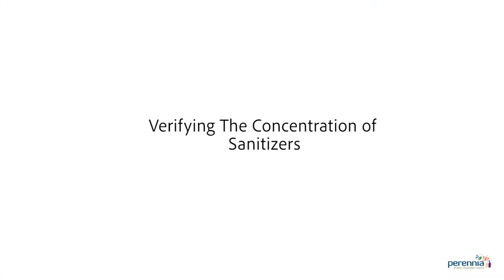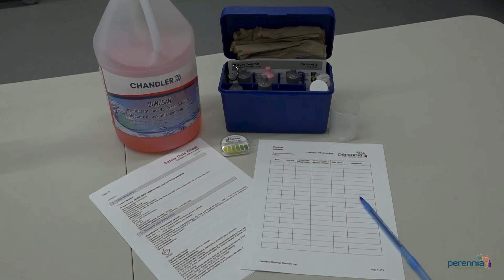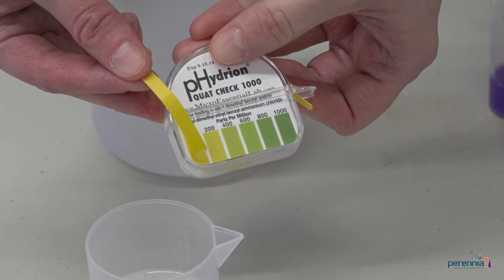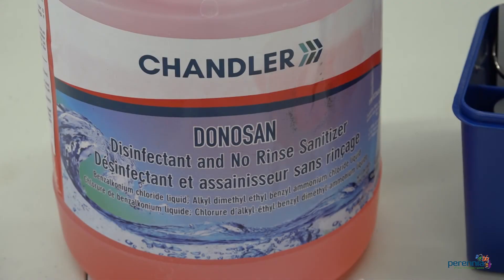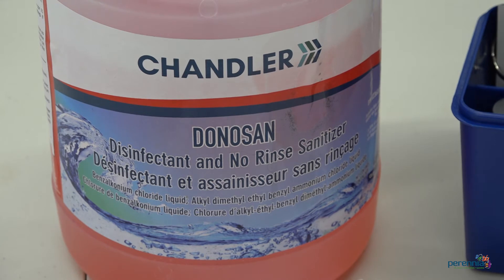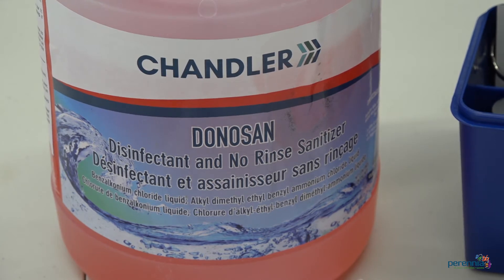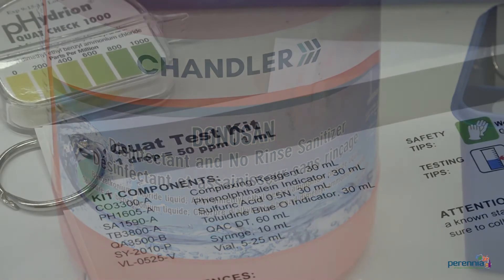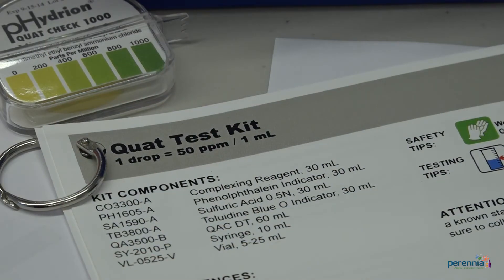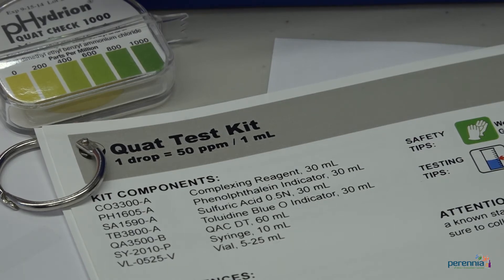To ensure you're using the correct concentration of sanitizer for your sanitation procedures, you can verify the concentration by performing a titration. Quad test strips may also be used in lieu of the titration method. For today's demonstration we will use Chandler's Donnisan, a quaternary ammonium sanitizer used after cleaning for sanitizing processing equipment and other hard surfaces. To effectively sanitize equipment and surfaces without requiring a potable water rinse, this sanitizer is to be used at a concentration of 200 parts per million.